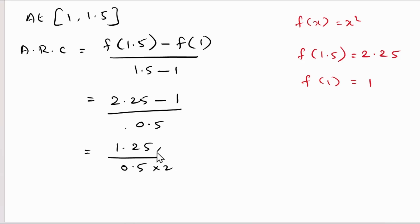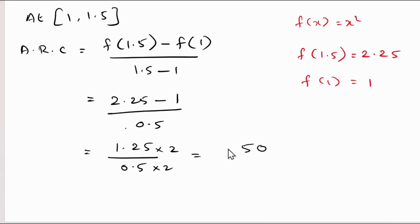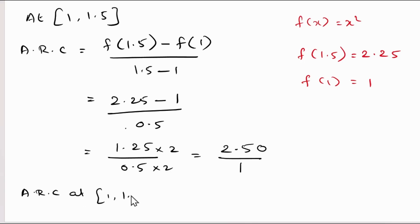1.25 divided by 0.5 — multiplying by 2: 1.25 × 2 = 2.50 divided by 1 = 2.50. So the average rate of change at [1, 1.5] is 2.5.